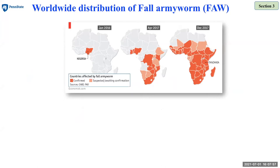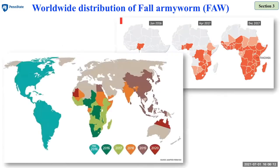The fall armyworm is an insect pest native to North and South America. This pest was first reported in Nigeria in 2016, and by the end of 2017 it was reported in many countries across the continent. It spread to Yemen and India in 2018, and other South Asian countries including China in 2019. Last year it was also reported in Australia.